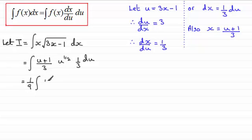Then I've got u to the half multiplied with the u plus 1. So that's going to give me u to the power 3 over 2, and then plus u to the power half. A couple of terms there, so I'll put that in brackets, and we're integrating all of this with respect to u.